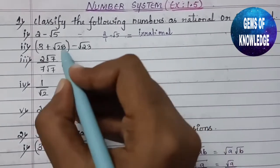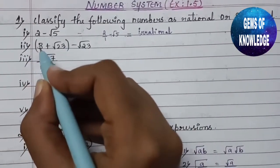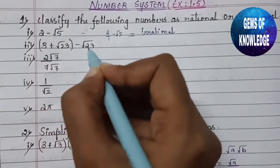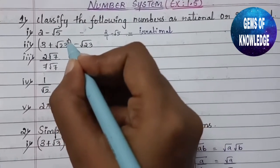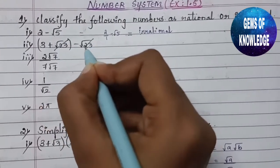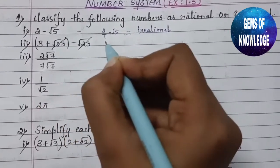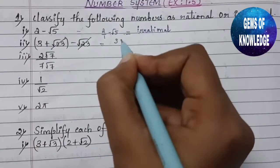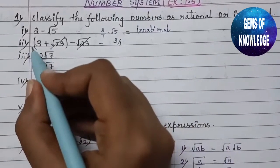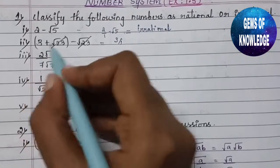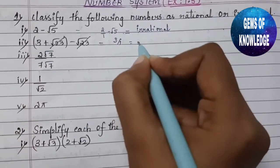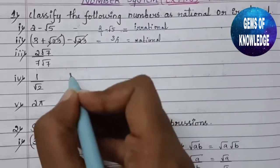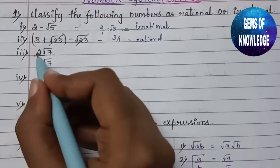The second question is 3 plus root 23 minus root 23. Here, plus root 23 and minus root 23 cancel each other out, and what remains is 3, which can be written as 3 by 1. So this is a rational number.